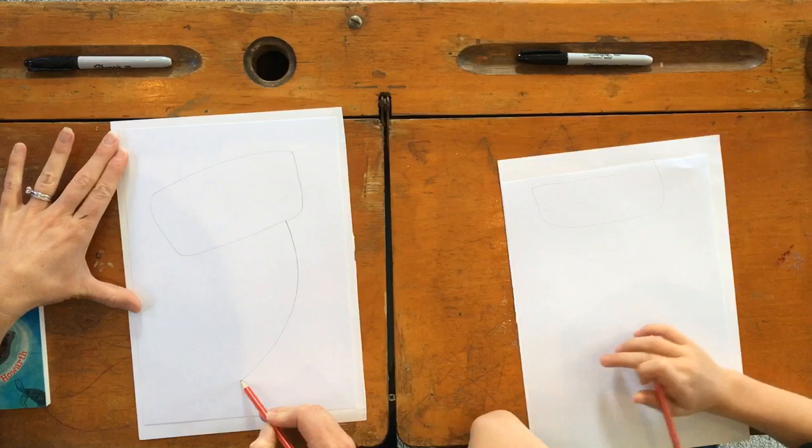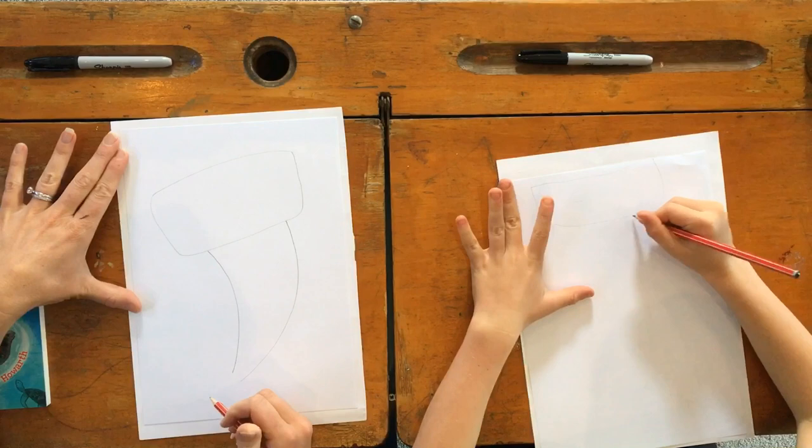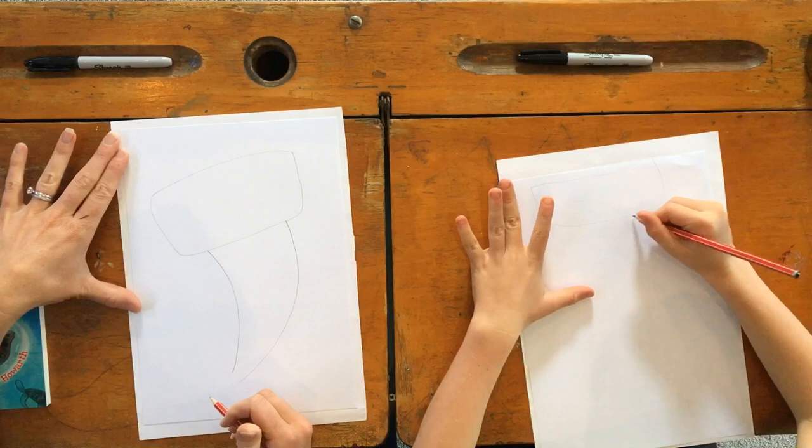Great, and now we're going to draw a shape where its body is going to go. So we're going to go down like this, almost to the bottom of the page but we need to leave room for its tail. And down like this. Great. Good.